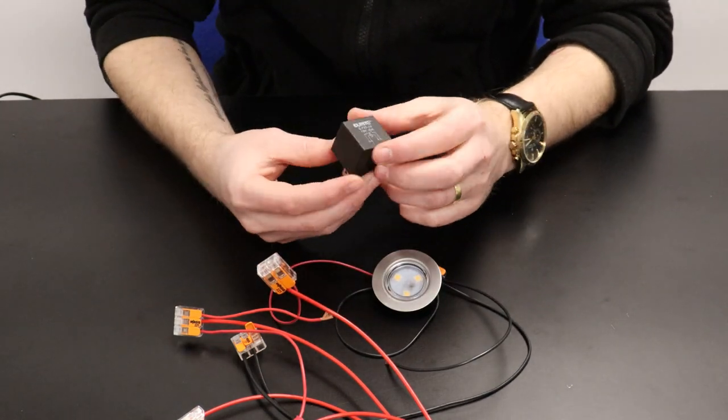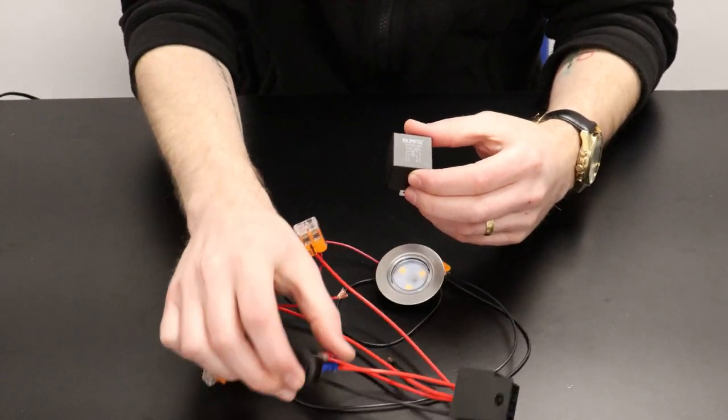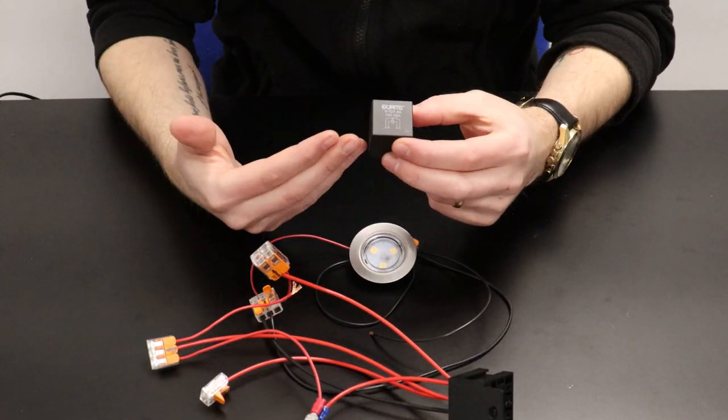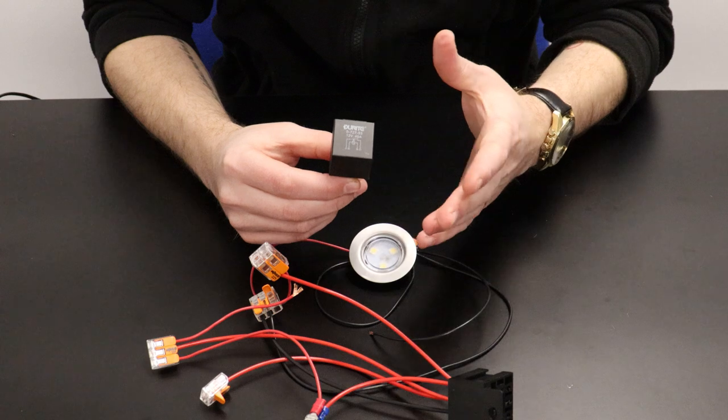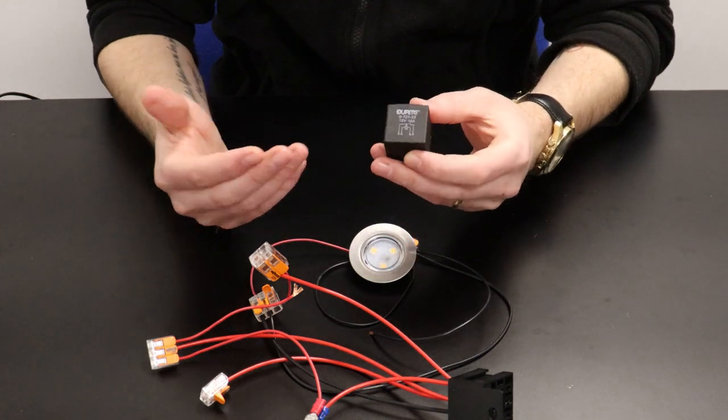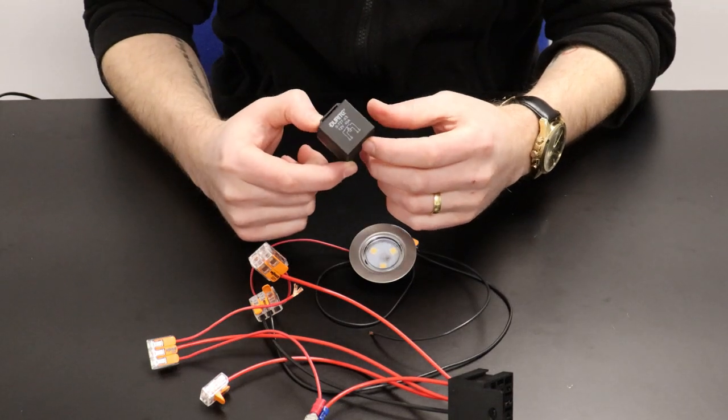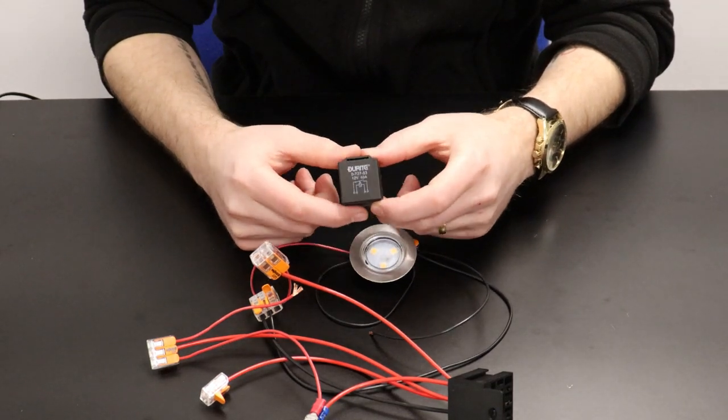When the coil is energized or when we apply the voltage by flicking our switch, the coil is energized and that will apply voltage to the circuit by closing the contacts of 30 and 87 which will then feed our power through.